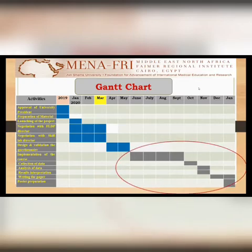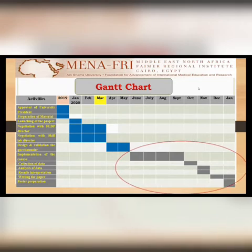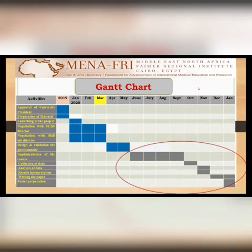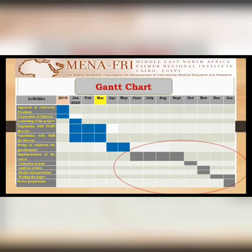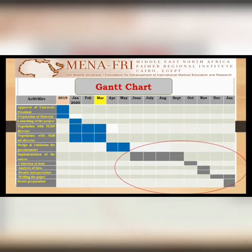In the first quarter, during the latter half of January through March, I started negotiating with the faculty learning and development program director to convince her to implement the course. She agreed, and I then began negotiating with the skills lab director at the faculty of medicine to reserve a skill lab with all the equipment needed.